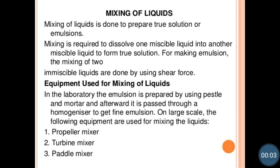Hello everyone. We have started with the new chapter that is mixing and homogenization. In the previous lecture we have seen what is meant by mixing, the objectives of mixing, and the types of mixtures. There are three types of mixtures: positive mixture, negative mixtures, and neutral mixtures.